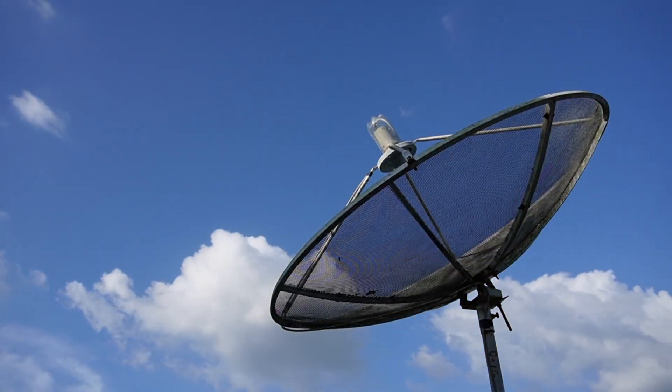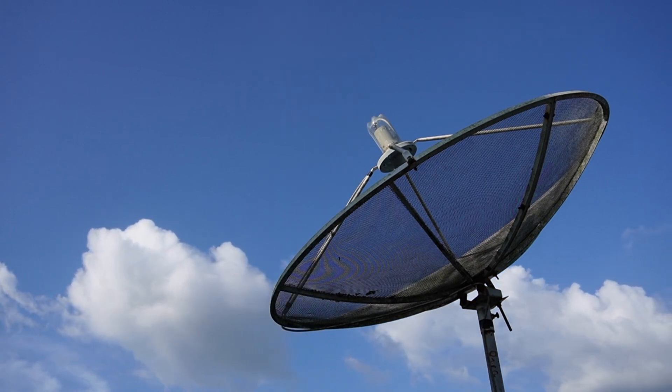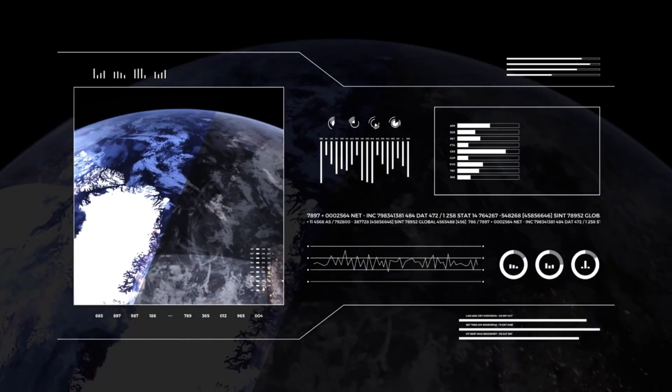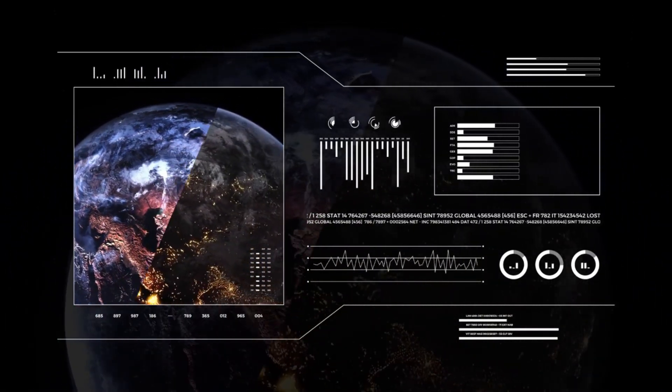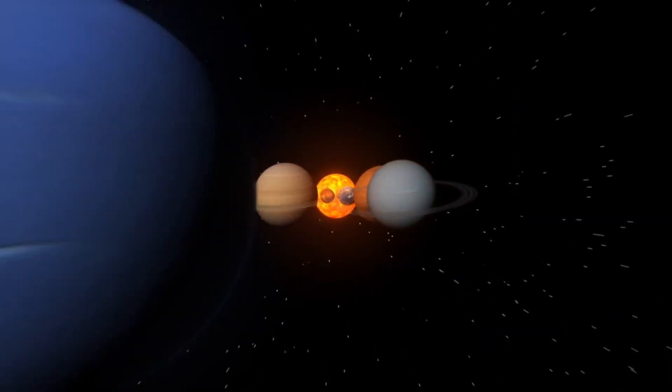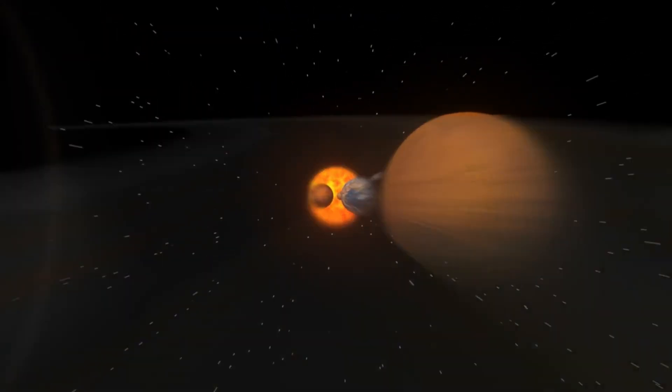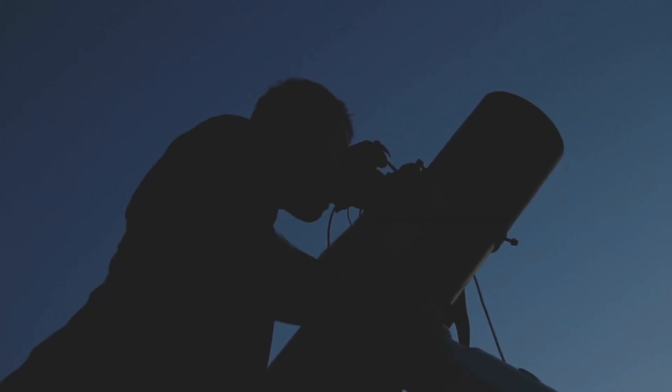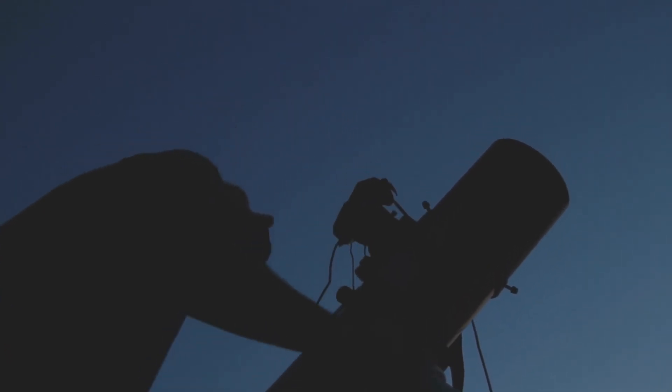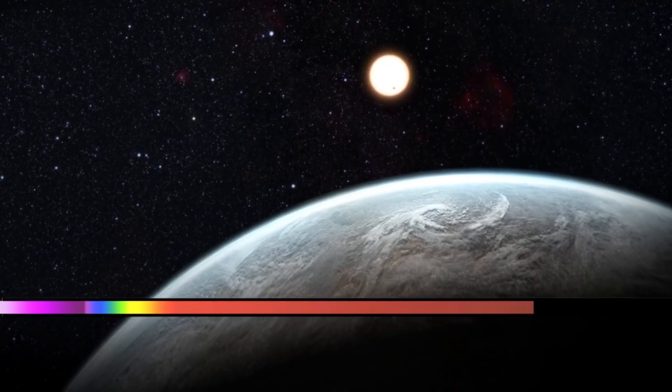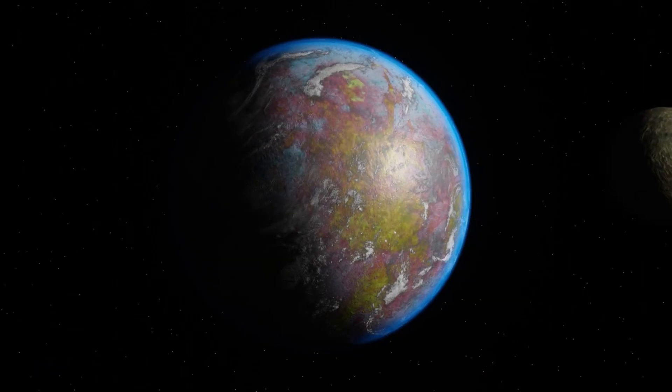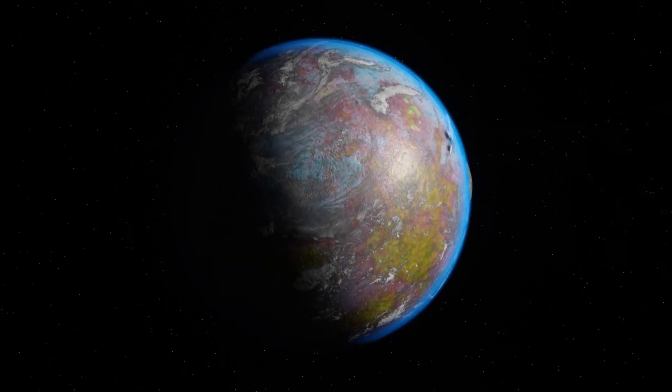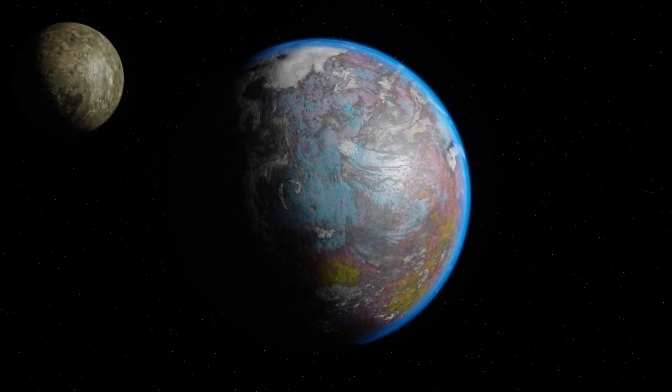The growing interest in exoplanets is not confined to Proxima B alone. Since the first confirmed discovery of planets outside our solar system in 1992, when astronomers found planets orbiting a pulsar, more than 5,000 exoplanets have been identified. Many of these are Earth-sized and located in their stars' habitable zones, where temperatures might allow for liquid water. These discoveries have been made possible through missions such as Kepler, TESS, and now the James Webb Space Telescope, each of which has added new layers of complexity and insight into our search for habitable worlds.